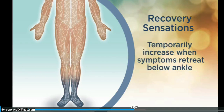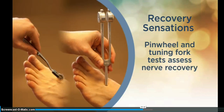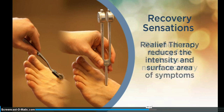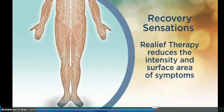In some patients, recovery sensations can temporarily increase when peripheral neuropathy symptoms retreat below the ankle, typically around treatment seven, eight, or nine. The increased sensations typically last for about a day and indicate that even the most symptomatic areas are responding to relief therapy. Pinwheel and tuning fork tests are repeated periodically throughout your course of care. These are standard neurologic tests used to assess the extent of nerve damage. As your treatment progresses, these tests are used to assess nerve function recovery. The goal of relief therapy is to reduce the intensity and surface area of peripheral neuropathy symptoms. By the time most patients complete the acute treatment phase, symptoms have retreated to just the balls of the feet and with reduced intensity.